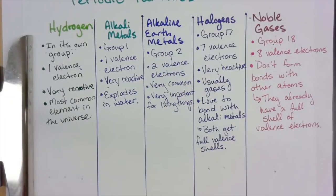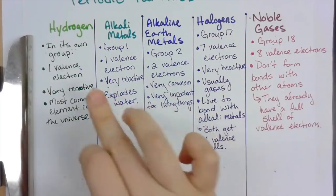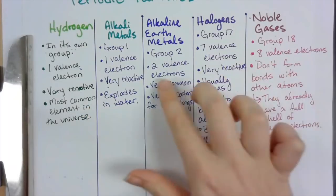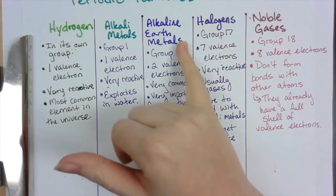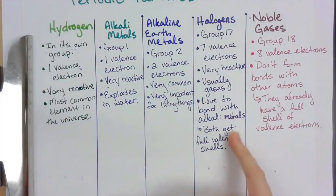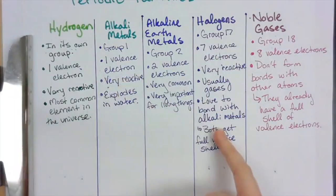Go ahead and finish your notes — repeat this video if you need to, and if you have any questions come see me in person or write me an email. Make sure you know the group numbers and names for all the families, the number of valence electrons, and quiz yourself on the other properties: reacting with water, alkaline earth metals being commonly found in the earth, and halogens loving to bond with alkali metals.